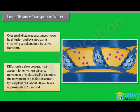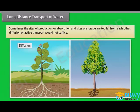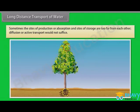Some trees are up to 50 feet tall. So think how many years it would take for the movement of molecules over a distance of 25 to 30 feet within a plant by diffusion alone. Sometimes the sites of production or absorption and the sites of storage are too far from each other. Diffusion or active transport would not suffice.